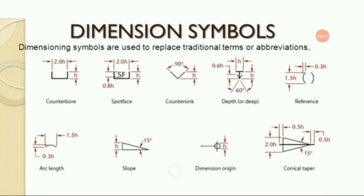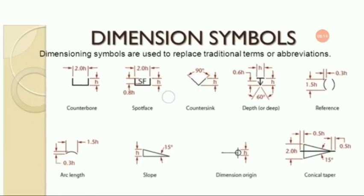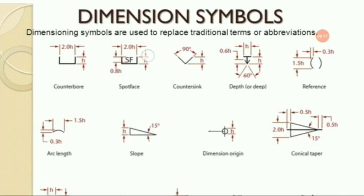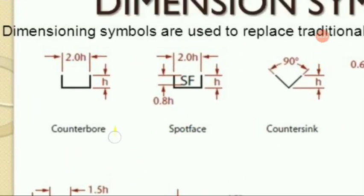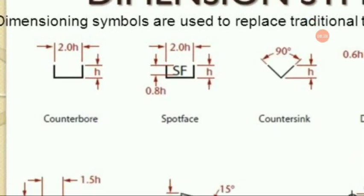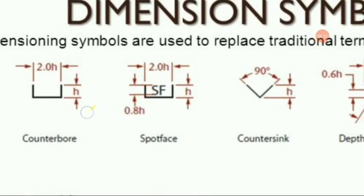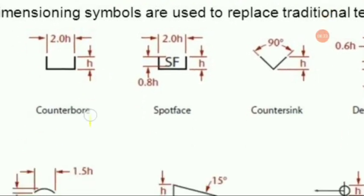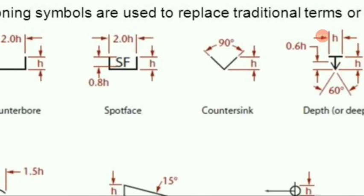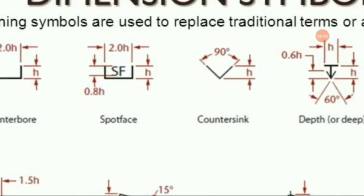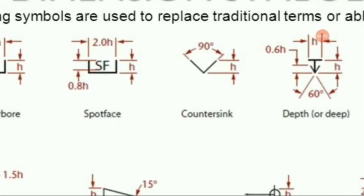Dimension symbols are used to replace traditional terms or abbreviations. First is your counter bore — here you can see the different dimensions given for a counter bore drawing. Next is the spot face operation; for spot face you write SF in abbreviated form, with H indicating height and other dimensions for length and breadth.